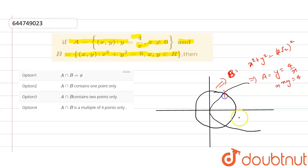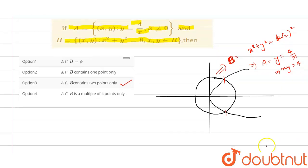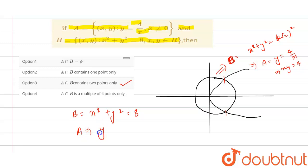We can see there are only two points of intersection of A and B, so A ∩ B contains two points only. We can verify this by another method: B is x² + y² = 8 and A gives y = 4/x.